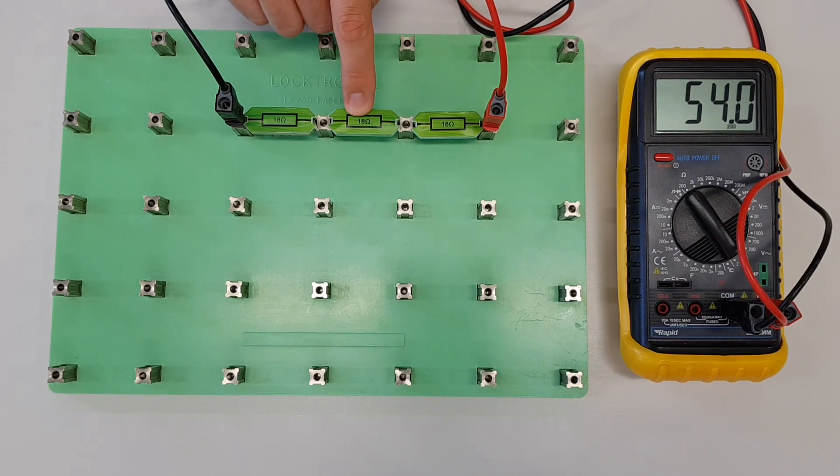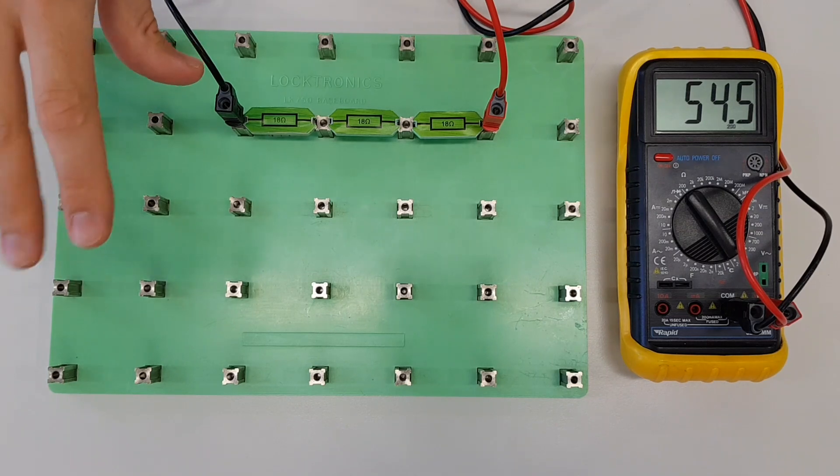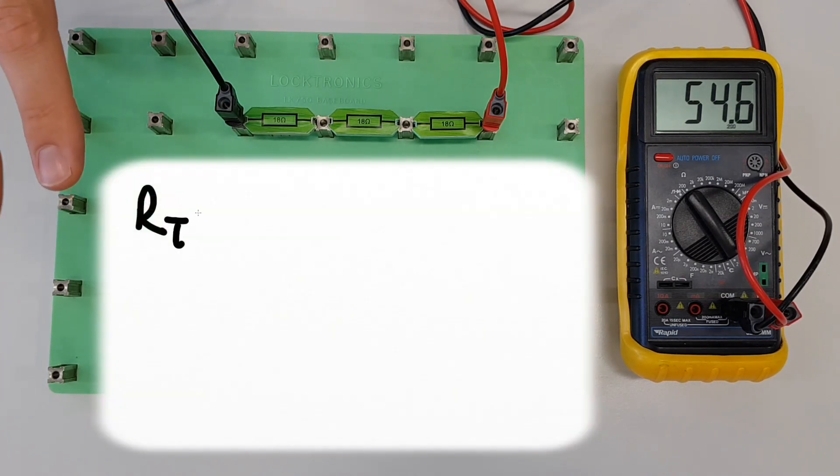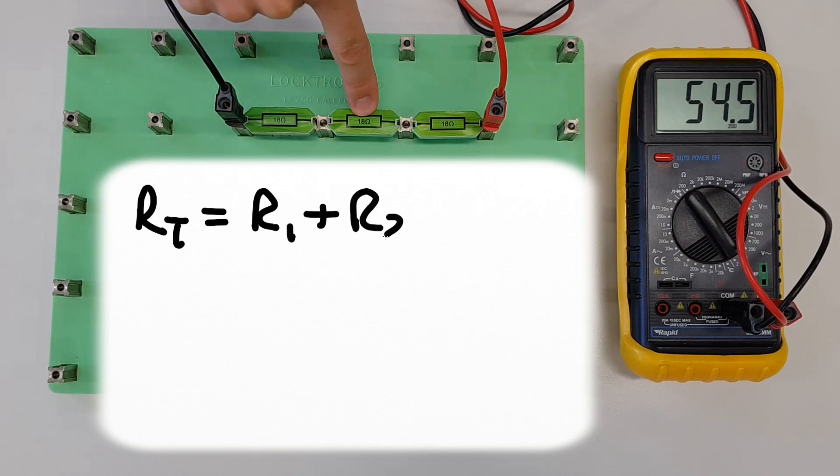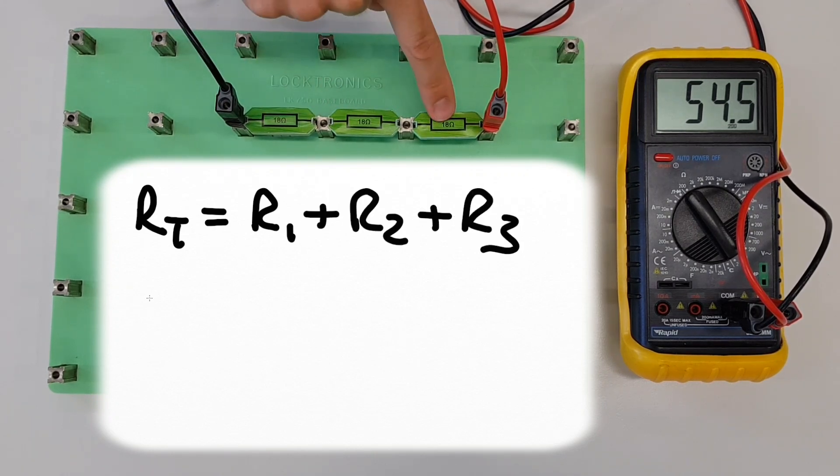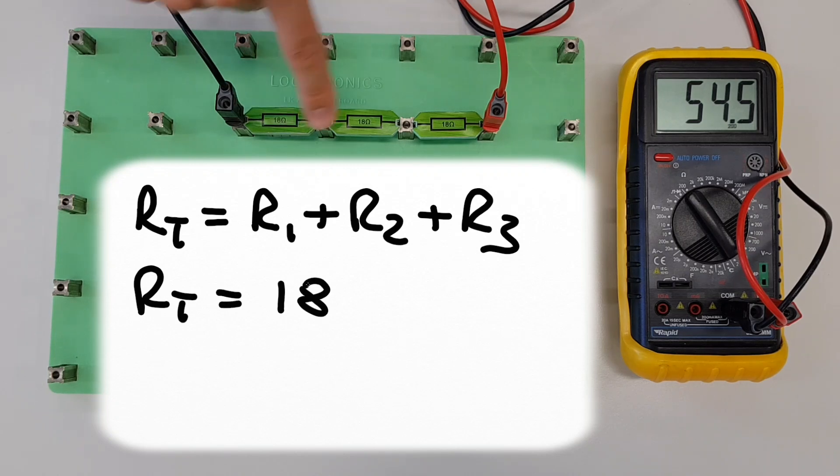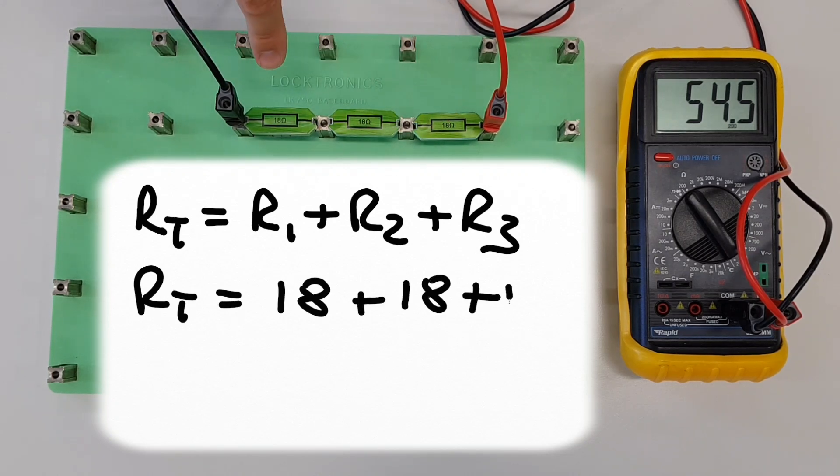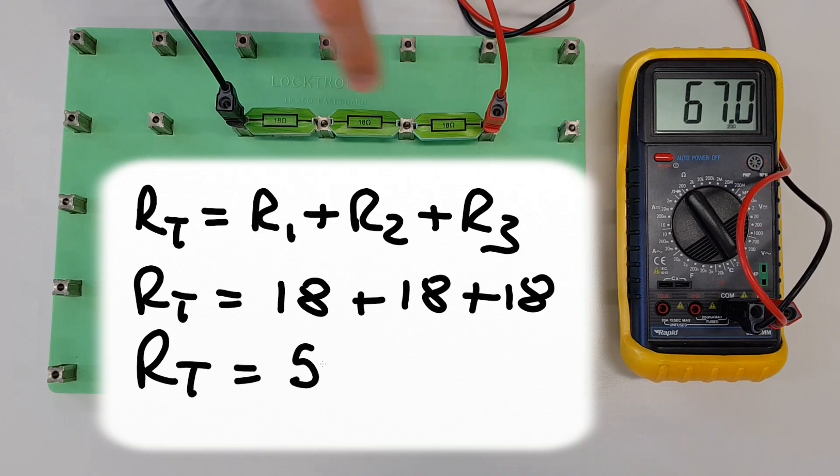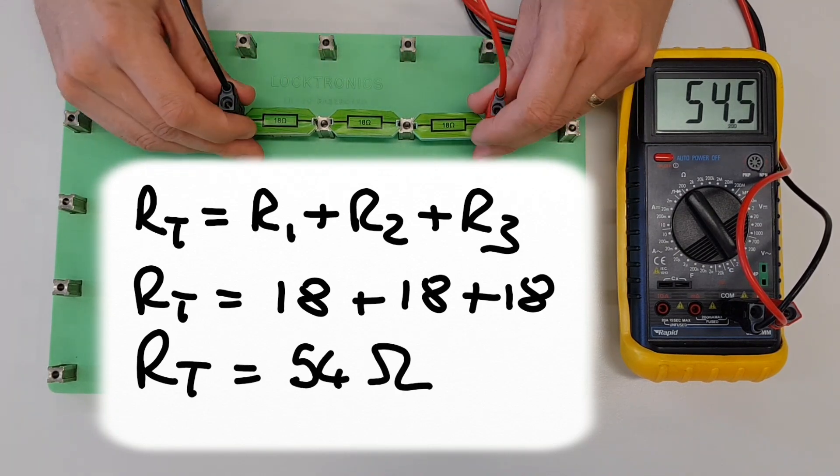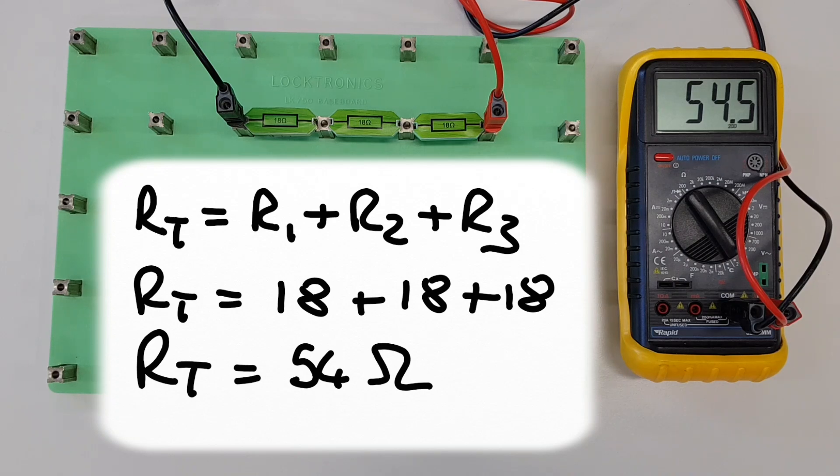From this, we can see that there's a very simple relationship between the value of the resistors and the total resistance of the circuit. We can write that out mathematically in the following way: RT, which is total resistance, is equal to R1 plus R2 plus R3. So those are just the values of the resistors. We'd say RT equals R1 plus R2 plus R3, which gives us RT equals 18 ohms plus 18 ohms plus 18 ohms, which would be RT equals 54 ohms.